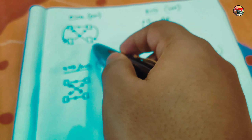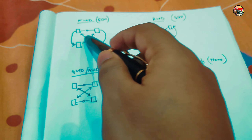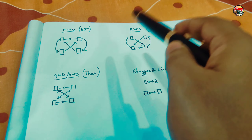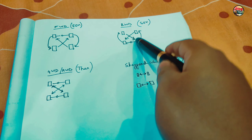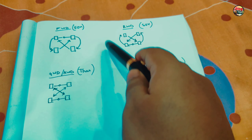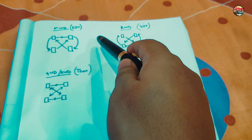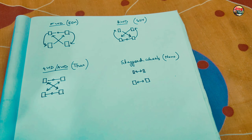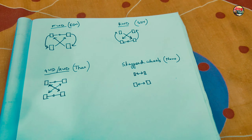For any RWD rear-wheel drive cars like SUVs and tempos, the switching pattern is exactly opposite to FWD cars, because the power is generated and shifted directly to the rear wheels — so the pattern is reversed compared to FWD. For four-wheel drive or AWD all-wheel drive cars, the switching pattern is an X-shape.